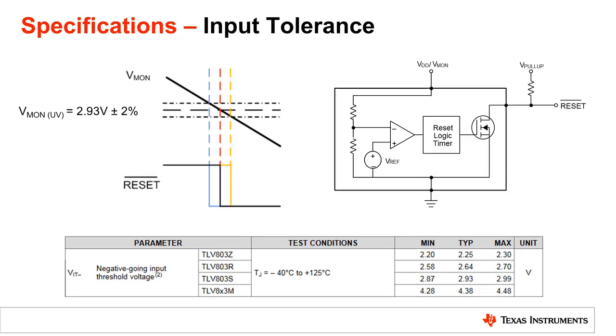As mentioned earlier in the video, the negative going voltage threshold, VIT-, has a voltage tolerance which directly affects VmonUV. This is due to temperature drift within the internal voltage reference. Moreover, the external resistors on an adjustable voltage supervisor or the internal resistors on a fixed voltage supervisor also have inherent tolerances. Together, they will yield a total tolerance and need to be accounted for in the system's design.